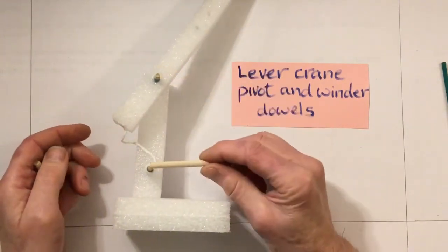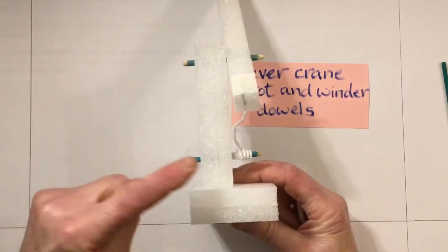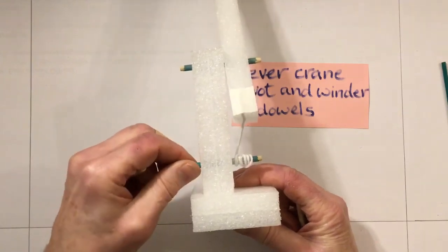The longer one is for the winder. The reason I have a longer one for the winder is you just need more room to put more string on it, so it gives you that bit more room to have the string attached.